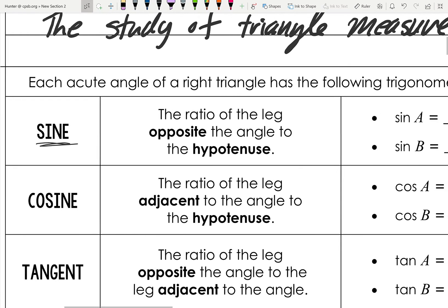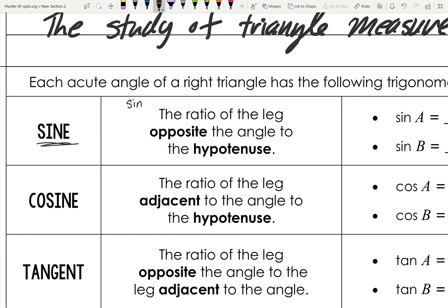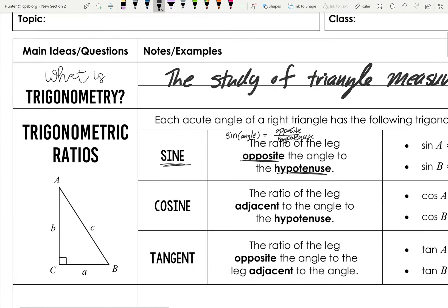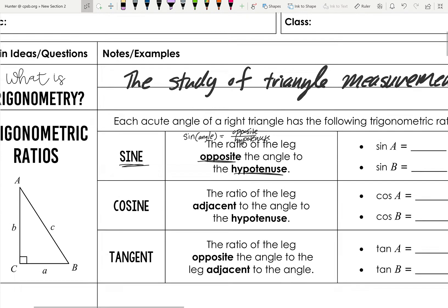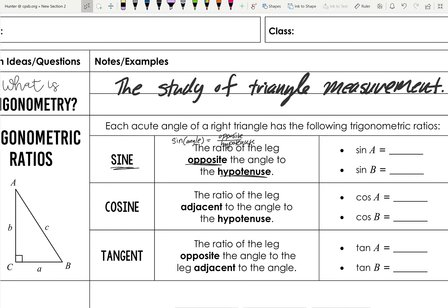Our first one is sine, written as 'sin' of some angle. It equals the ratio of the leg opposite to the angle over the hypotenuse — opposite over hypotenuse. Looking at our triangle, angles A, B, and C are labeled, with C as the right angle, and sides labeled lowercase a, b, and c. So sine of angle A equals a over c.